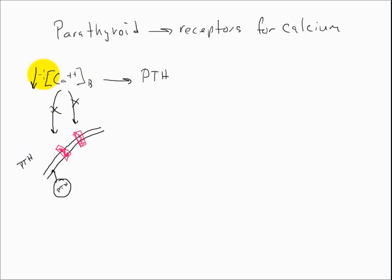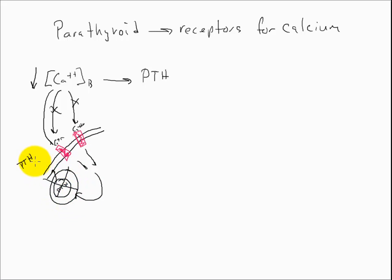Once calcium returns to a normal level, it can now bind to the receptors — calcium will bind here and here. What we'll see in return is an event that will eventually cause the fusion event to stop occurring, removing parathyroid hormone from the blood. So when there isn't enough calcium to bind to the receptors, PTH is secreted through exocytosis into the blood.